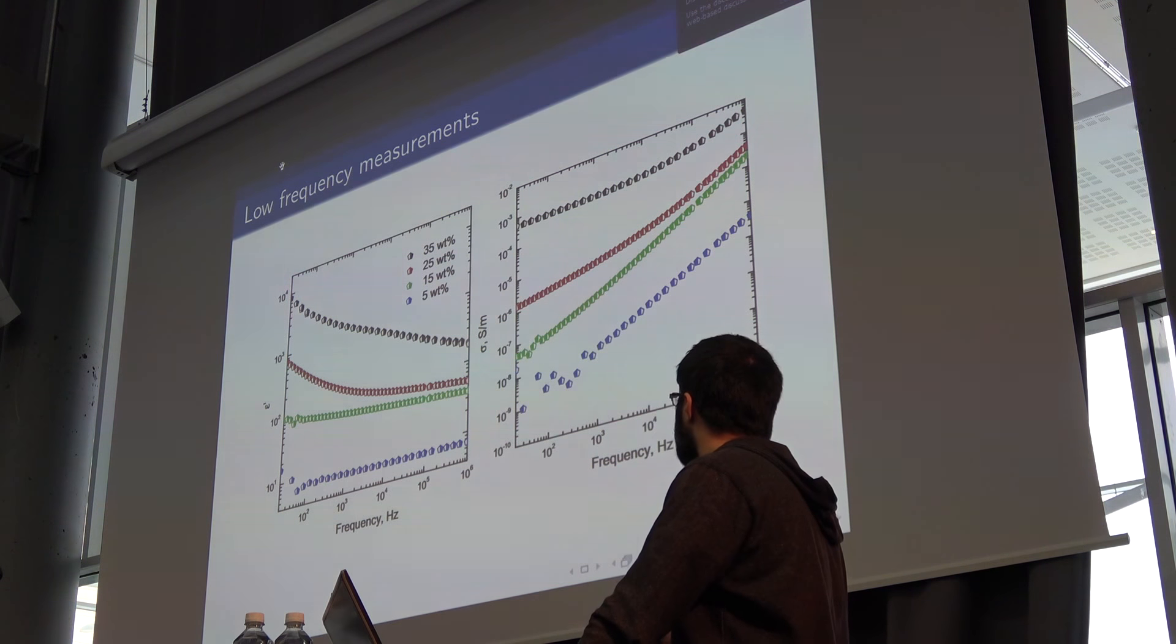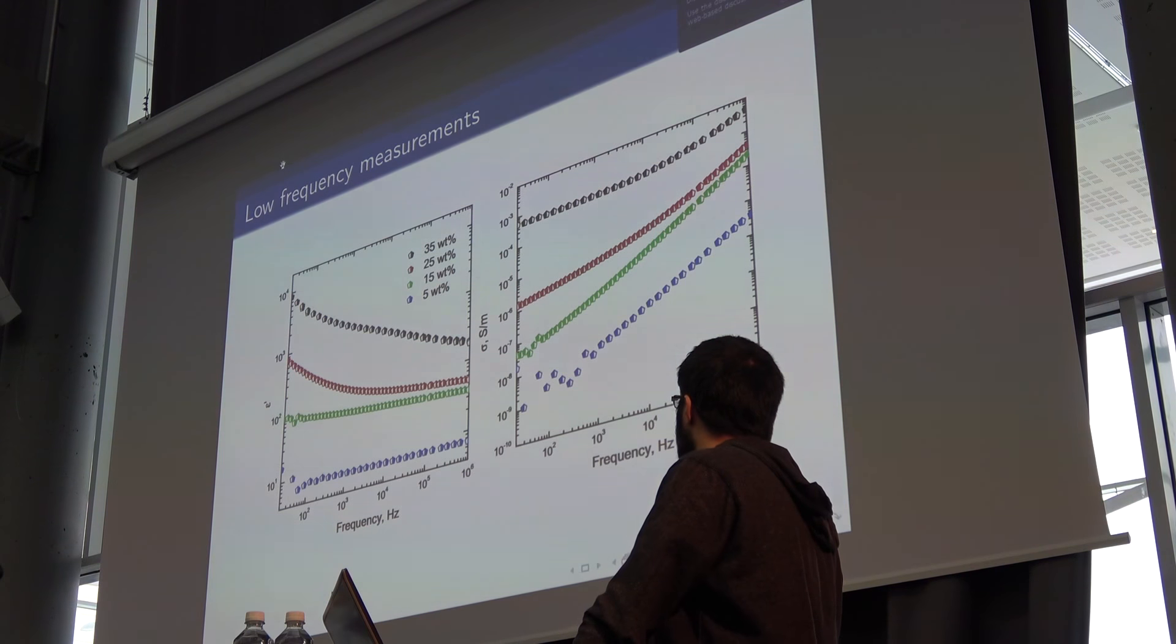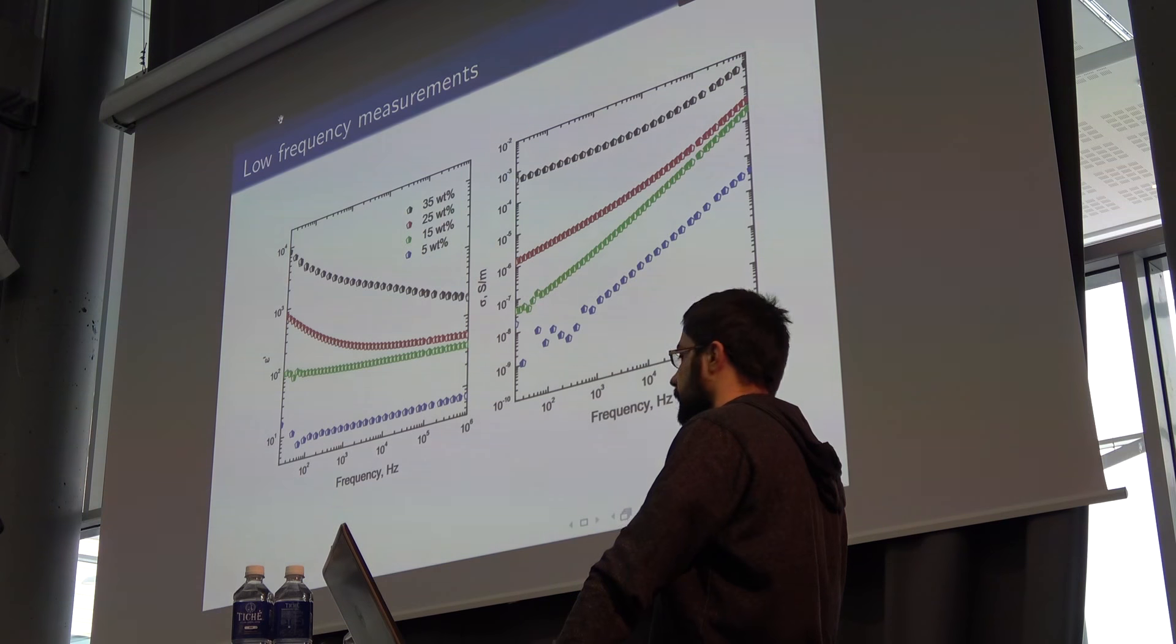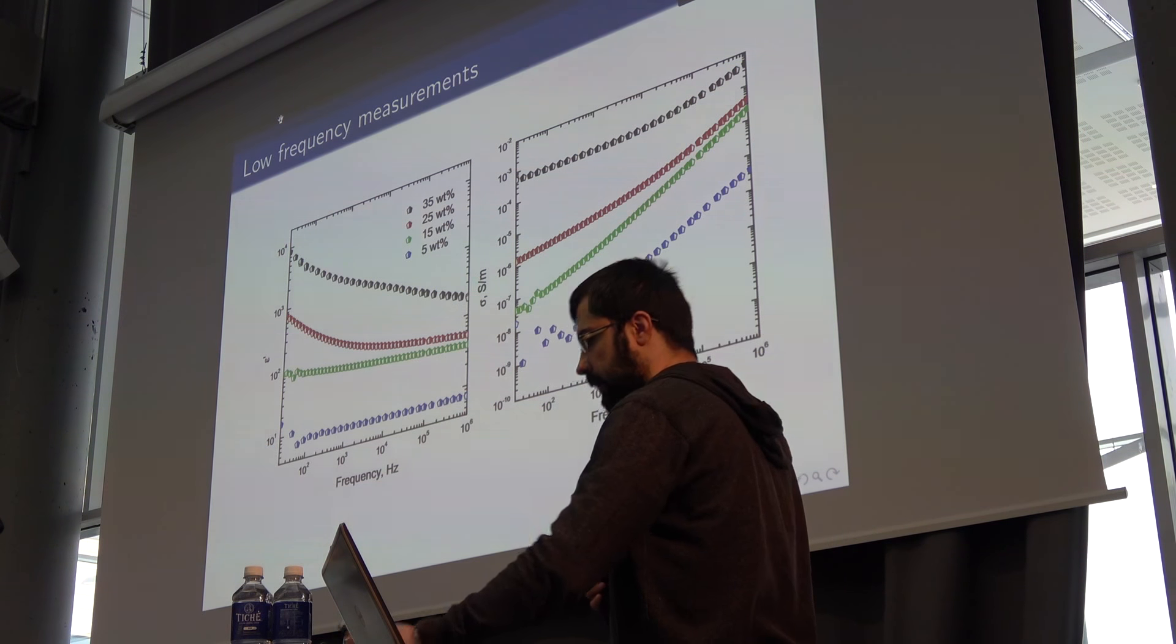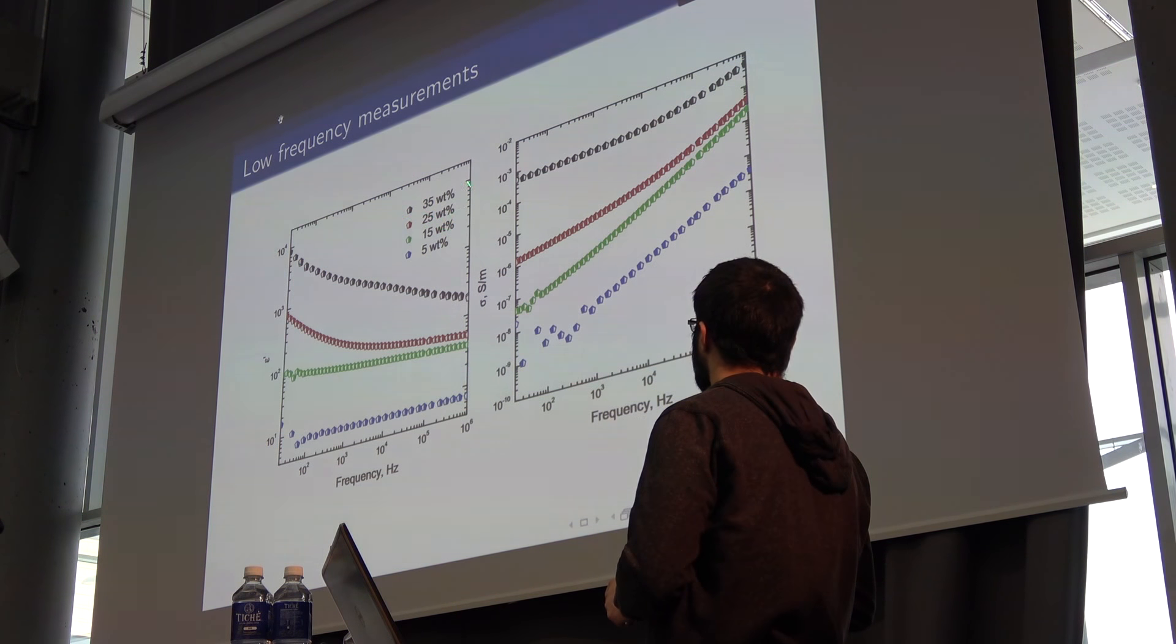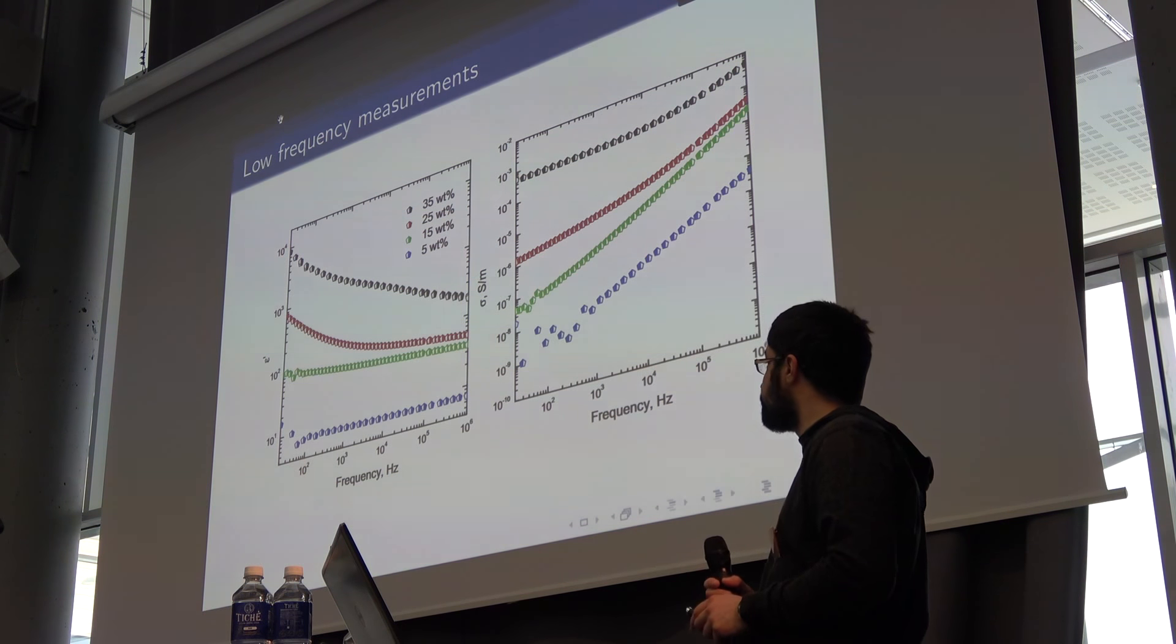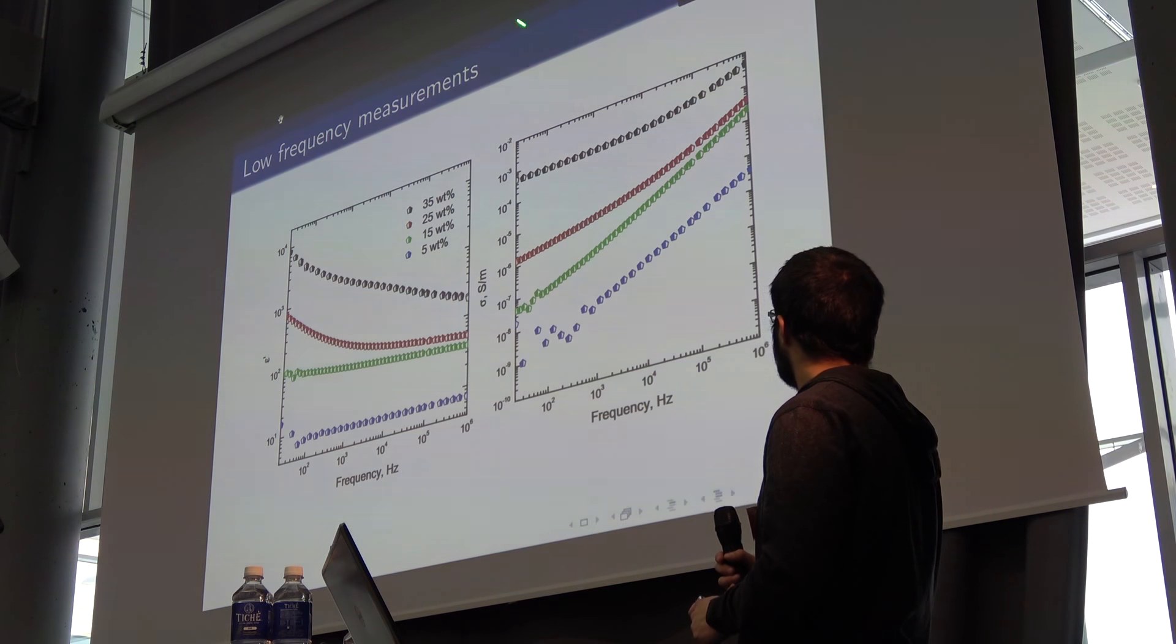First, let's start with low frequency results. Since it is a semiconducting material, we didn't expect a huge increase of conductivity or dielectric constant at low concentrations. But if we add 25 or 35 percent, we can say that we already have percolation here, and 35 percent demonstrates percolation very well.